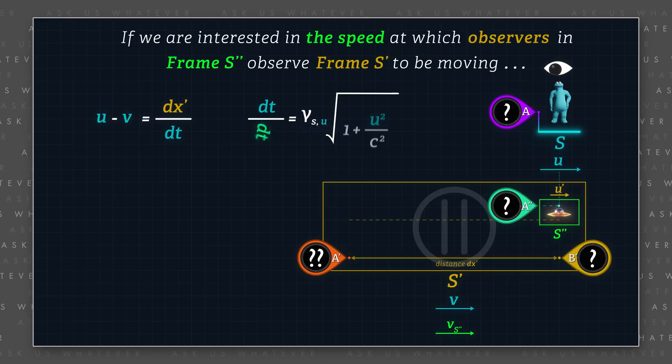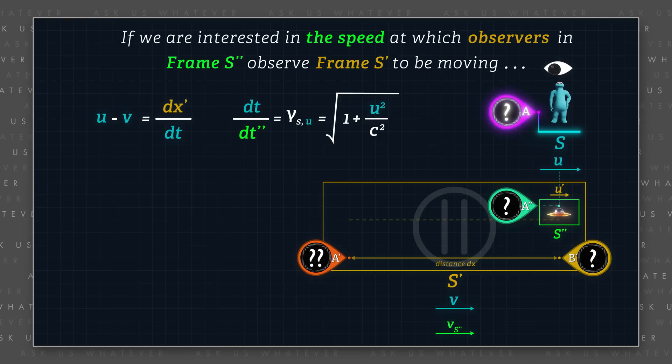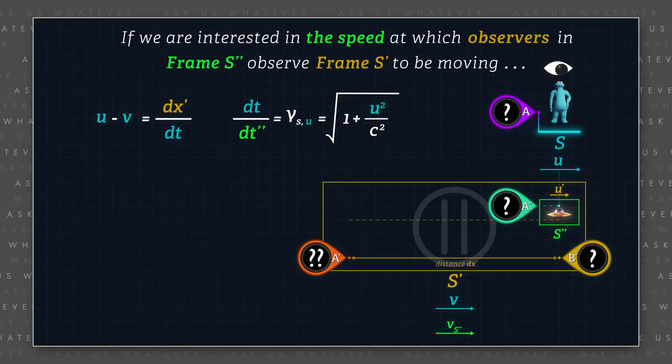we need to convert dt to dt double prime. If we use only one clock in frame s and one clock in frame s double prime, the time dilation factor between frames s and s double prime will be equal to gamma s computed using their relative speeds u.